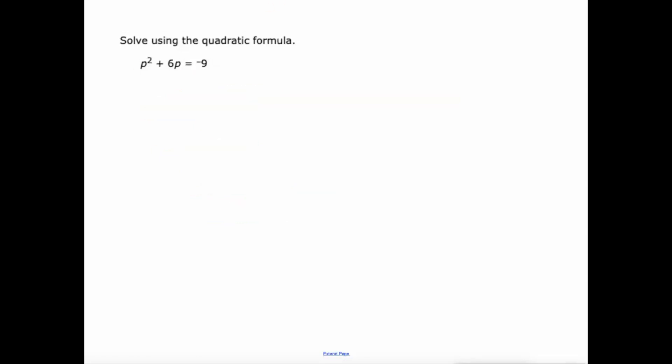Two more. This one is interesting because it's not in general form yet. The first thing we need to do is add 9 to both sides of this. And then we can see that a is 1, b is 6, and c is 9. So here we go. P equals negative b plus or minus the square root of b squared. 6² is 36. Minus 4 times a times c. A times c, 1 times 9 would be 9. Times 4 would be 36. Check that out. That's interesting. All over 2 times a. 2 times 1 is 2.